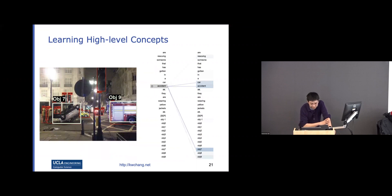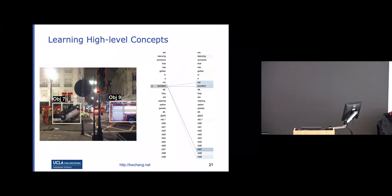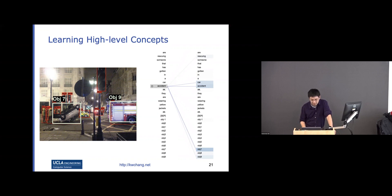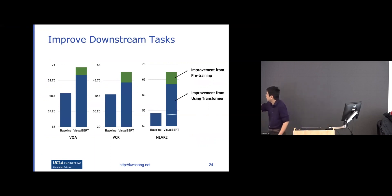Even with these simple objectives, the model can identify something interesting. For example, the model puts higher attention weight between the word 'accident' and object 7, which is the car that's upside down. It also puts some weight on object 9, which is an ambulance or firetruck — because accidents usually come with firetrucks, showing the model has captured that representation. When fine-tuned on several downstream tasks, we see improvement over existing approaches.